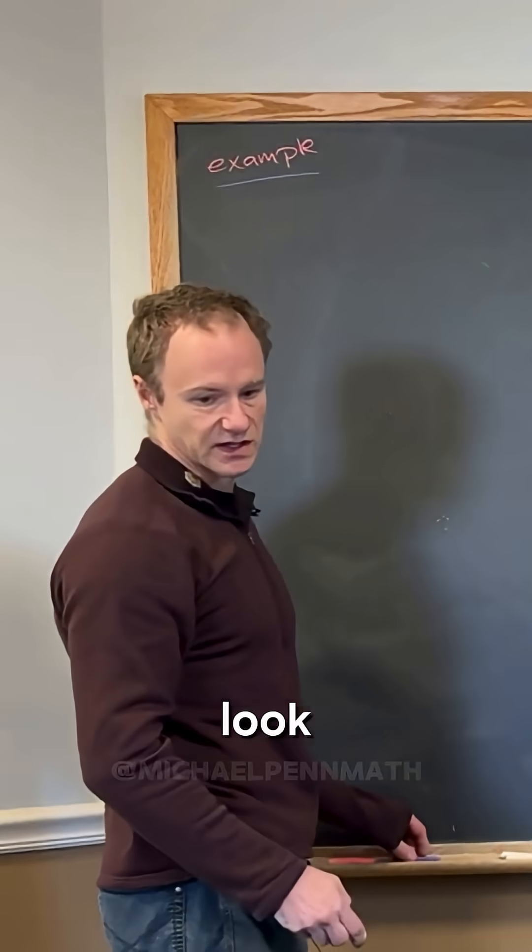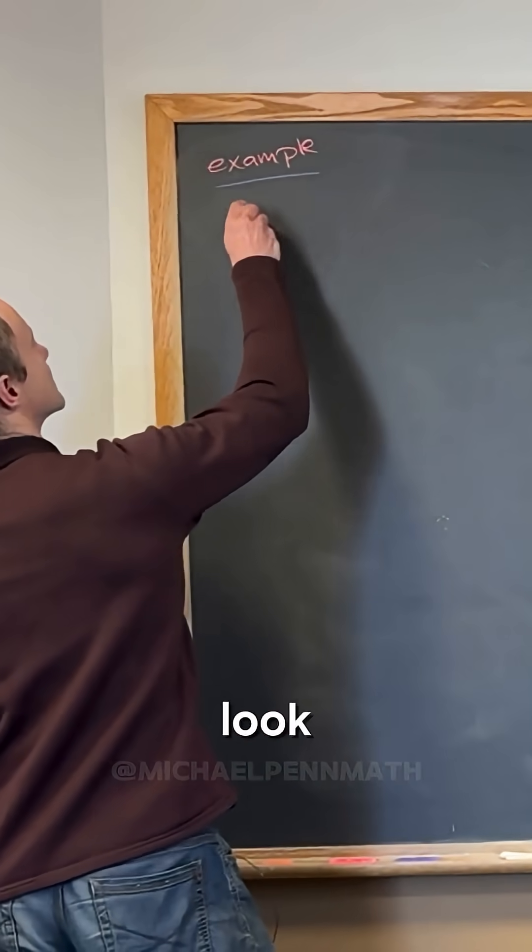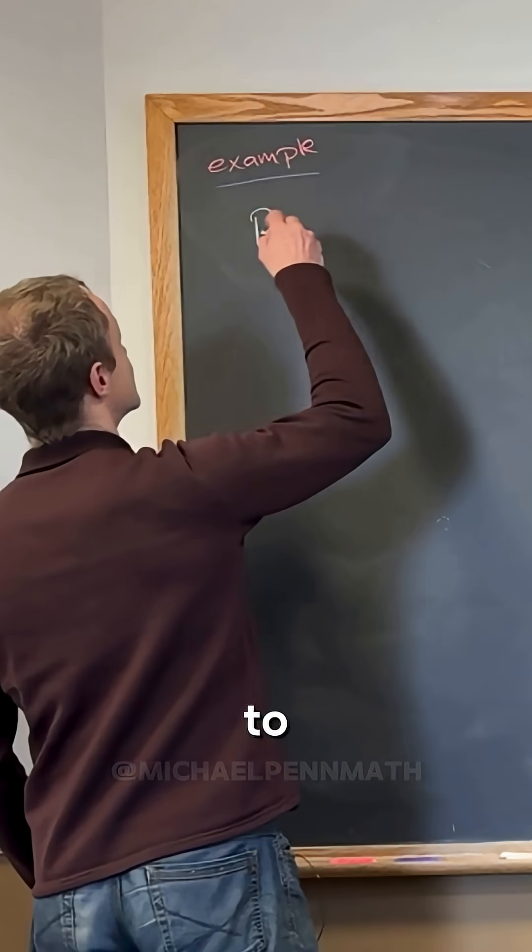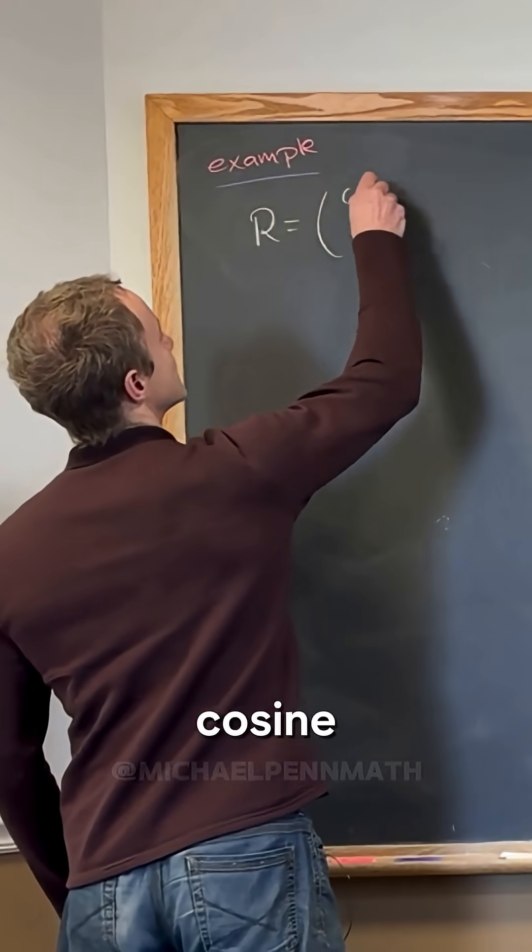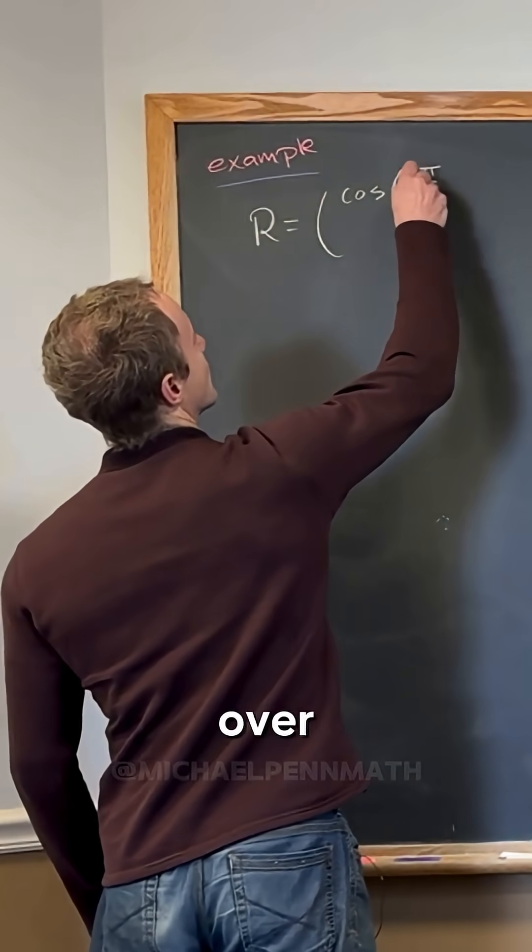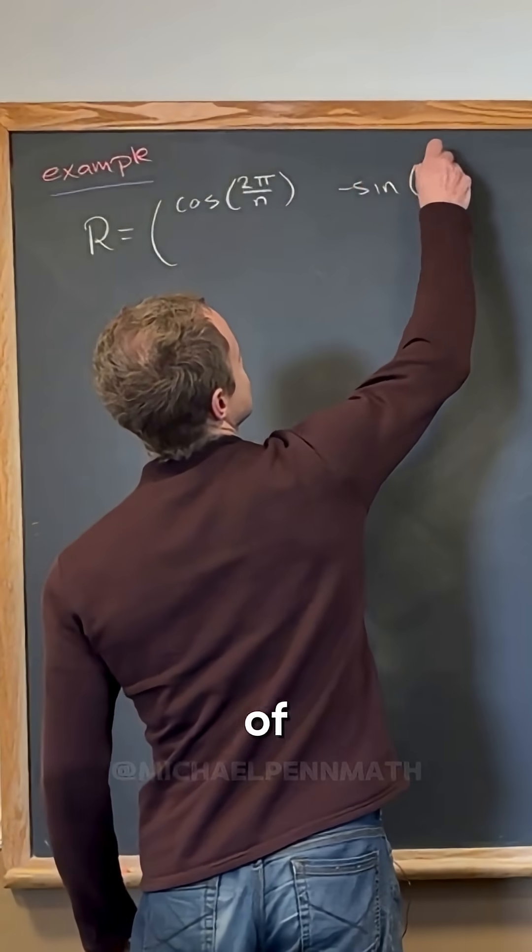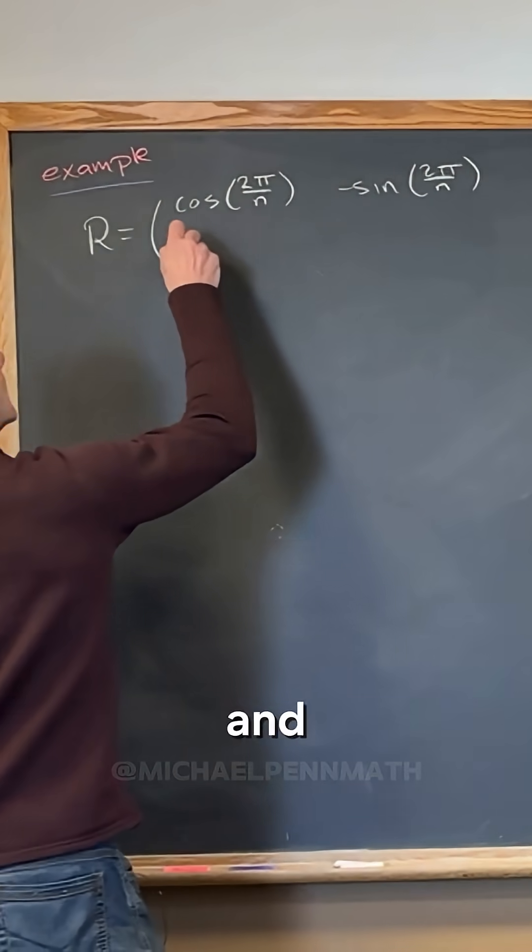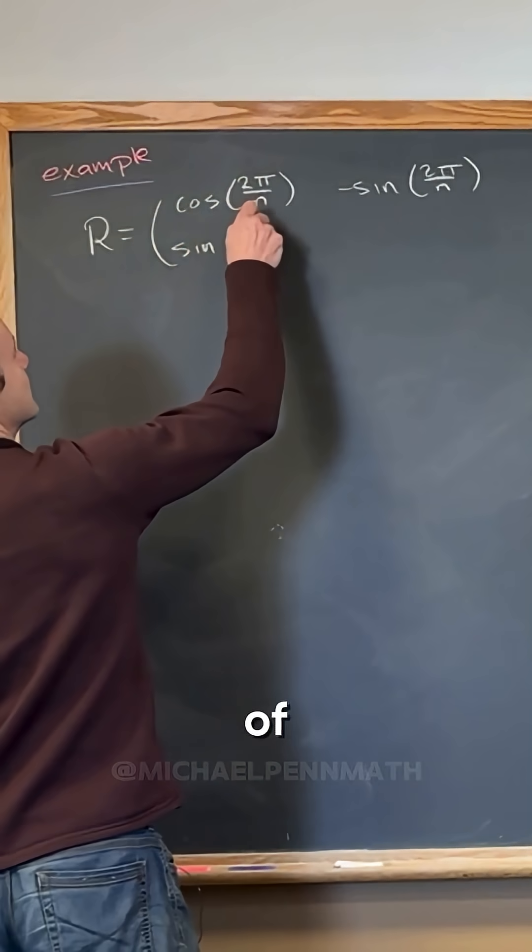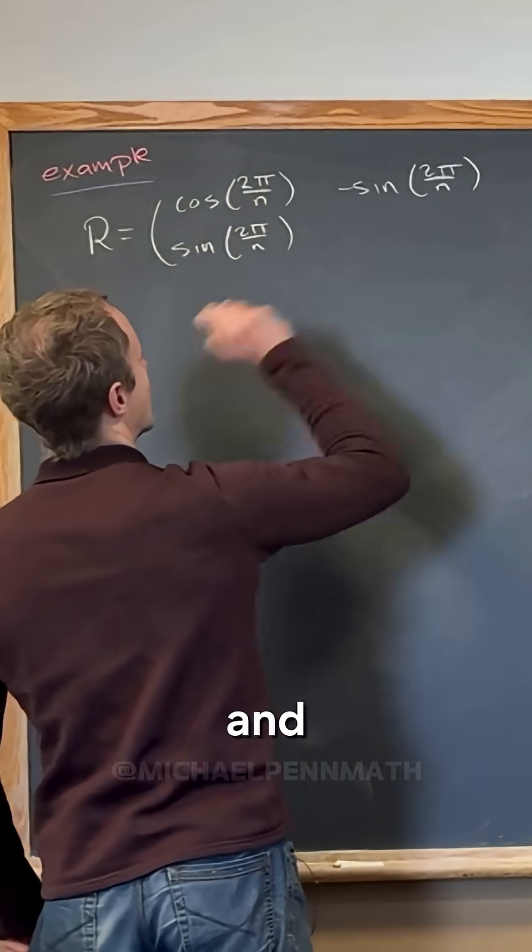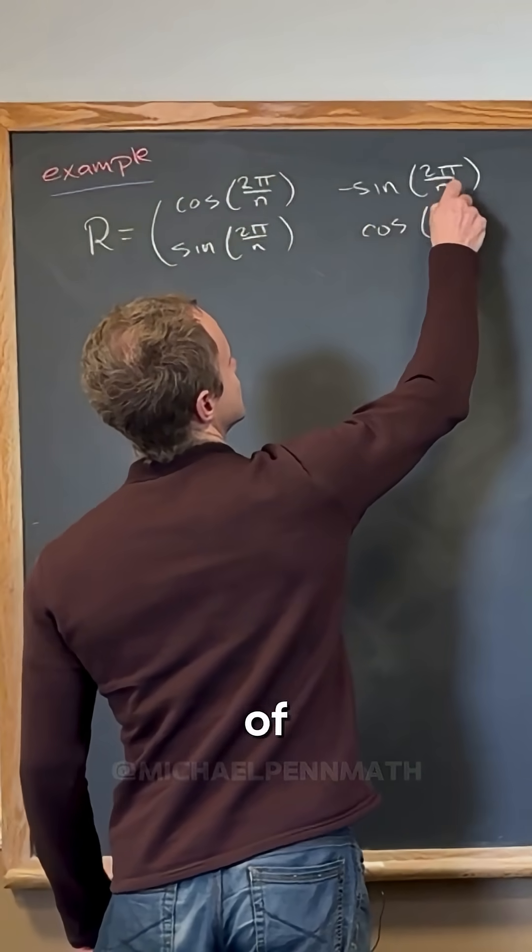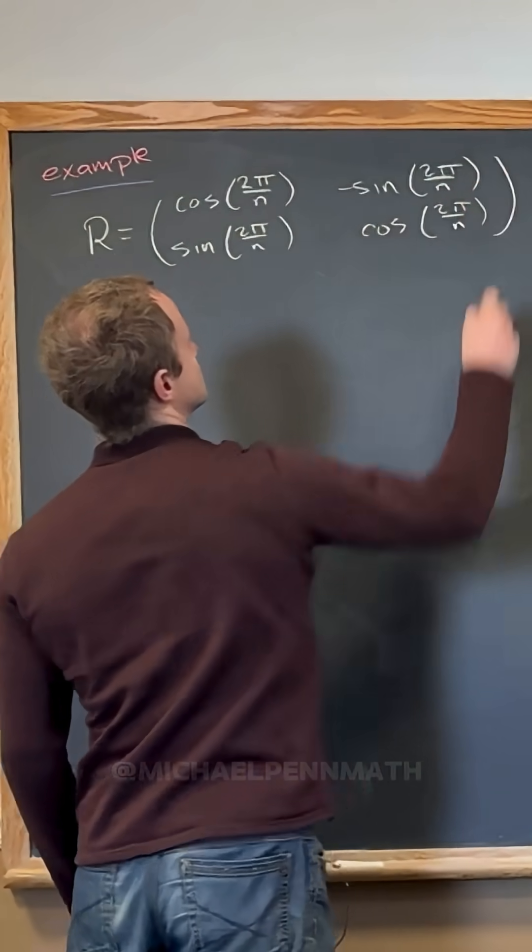So let's look at these matrices. Let's look at R, which is equal to the cosine of 2π over n and then here we'll have minus the sine of 2π over n, and then here we'll have the sine of 2π over n, and then here we'll have the cosine of 2π over n.